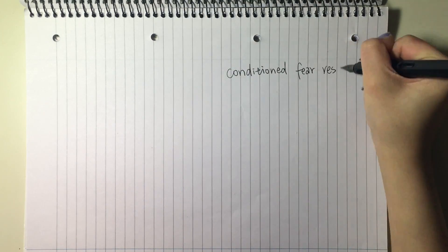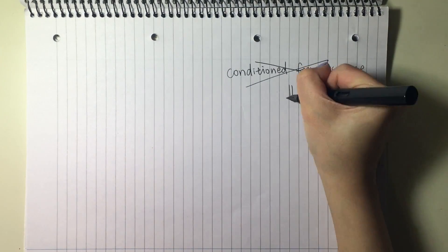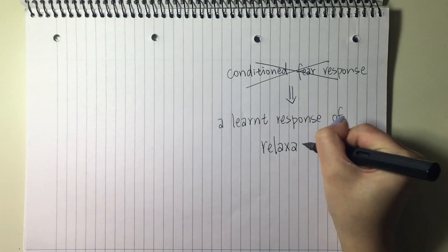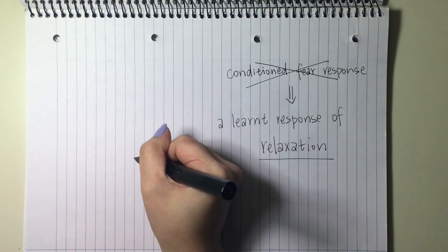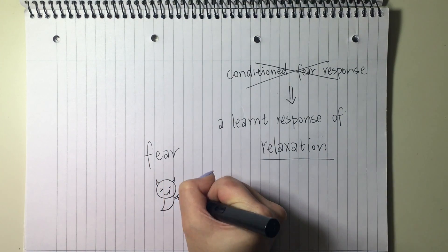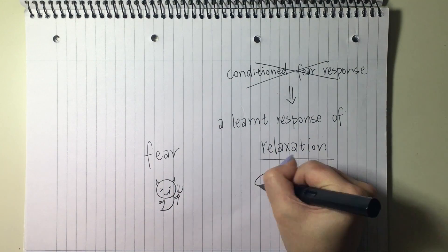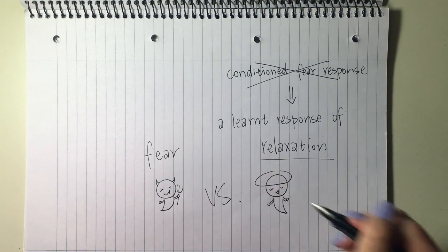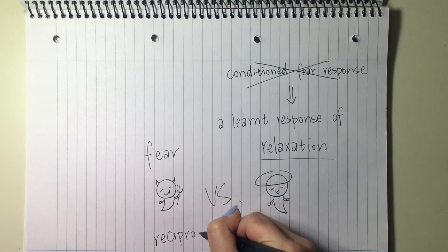The process of systematic desensitization is that over a period of time, the conditioned fear response to the conditioned stimulus changes to a learned response of relaxation. This is called counter conditioning, as it is impossible to feel both fear and relaxation at the same time, so the aim is that relaxation prevents the fear. This is called reciprocal inhibition.